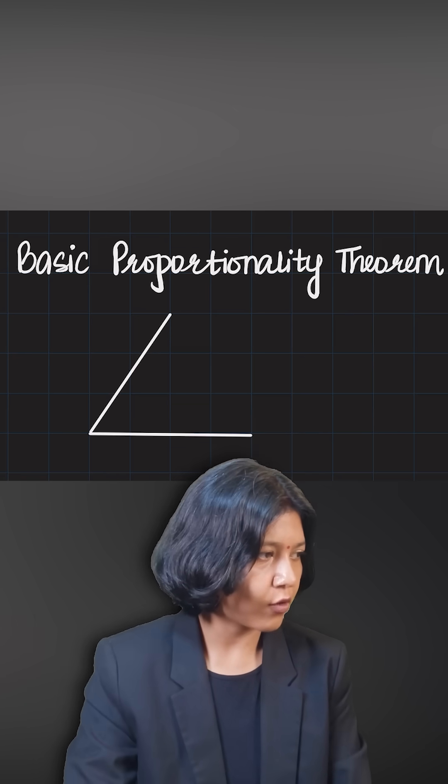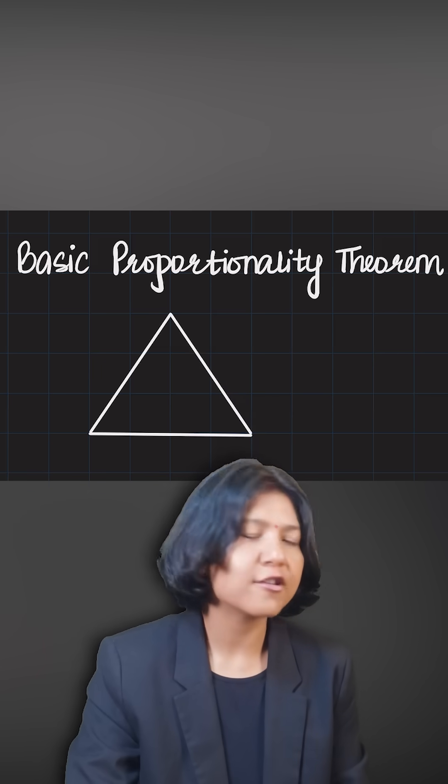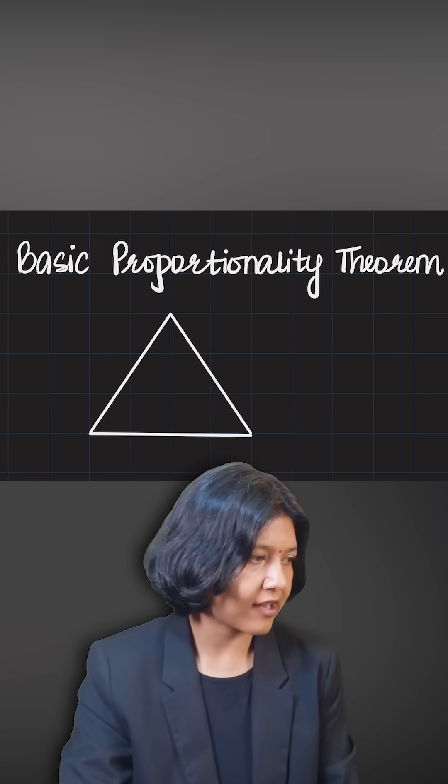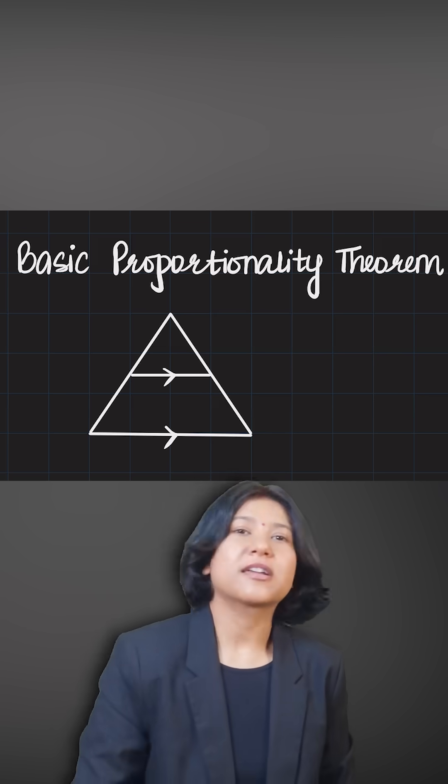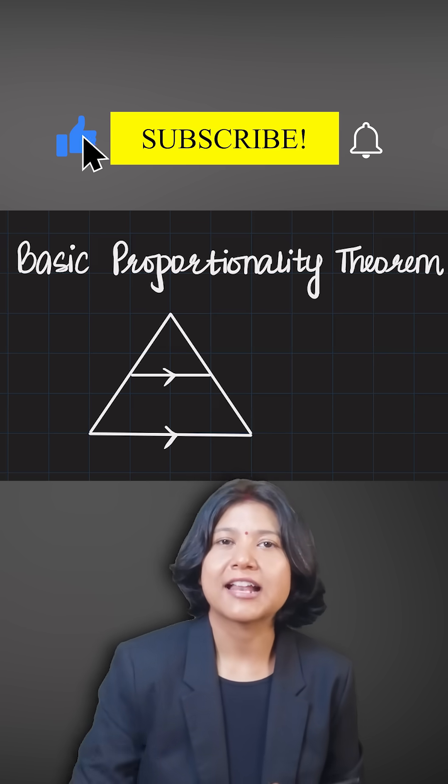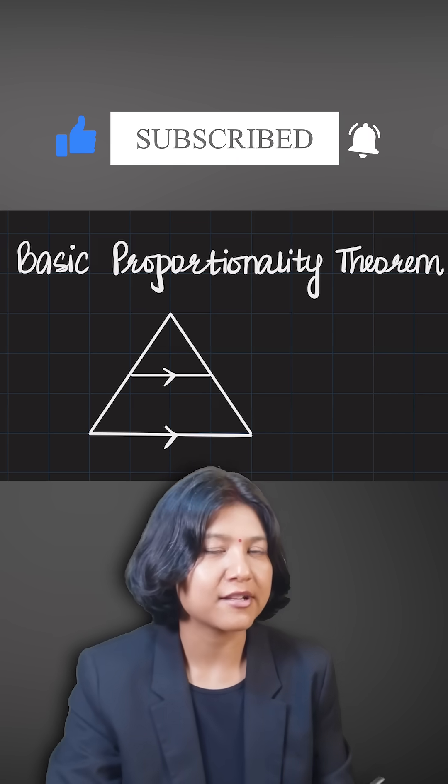Now in this triangle, I want to draw a line that's parallel to one of the sides. So let's say I want to draw a line parallel to this side. Then, because of parallel line properties, I'll get two triangles which will be similar to each other.